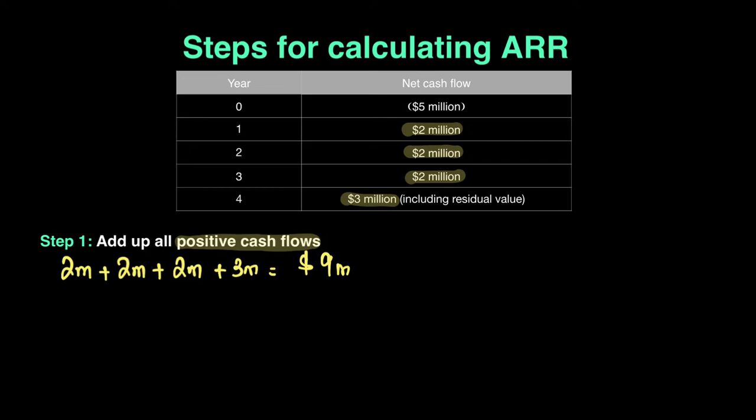From there, I go to step number two. And my step number two is that I have subtracted my initial investment amount from my $9 million. I'm going to highlight my initial investment amount in blue. So that's $5 million here. Now I know that from the $9 million that I earned from the four years, I had to first put down $5 million, which gives me a total value of $4 million.